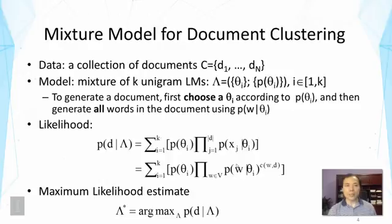So the model basically would make the following assumption about the generation of a document. We first choose a theta i according to probability of theta i and then generate all the words in the document using this distribution. Note that it's important that we use this distribution and then generate all the words in the document. This is very different from the topic model.